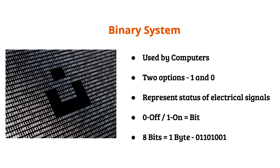Binary is a notational system used by computers. You may have heard the saying computers communicate in ones and zeros — the ones and zeros are binary code. Everything the computer does is translated into ones and zeros, which is the language the computer speaks. The ones and zeros represent on for one, and off for zero. The computer uses electrical signals: a one means the electrical signal is on, and zero means the electrical signal is off.